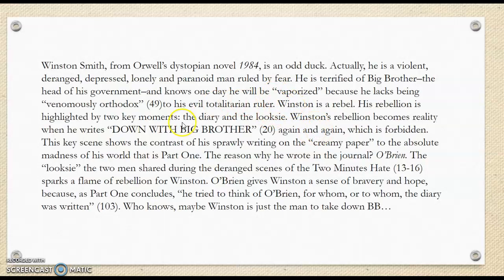Winston is a rebel. His rebellion is highlighted by two key moments: the diary and the look-see. I wanted to talk about two things — I don't go super long and in-depth, but talking about only one thing may not be enough, especially because part one for this book is long, over a hundred pages. Winston's rebellion becomes reality when he writes 'down with Big Brother' again and again, which is forbidden. This key scene shows the contrast of his sprawly writing on the creamy paper to the absolute madness of his world that is part one.